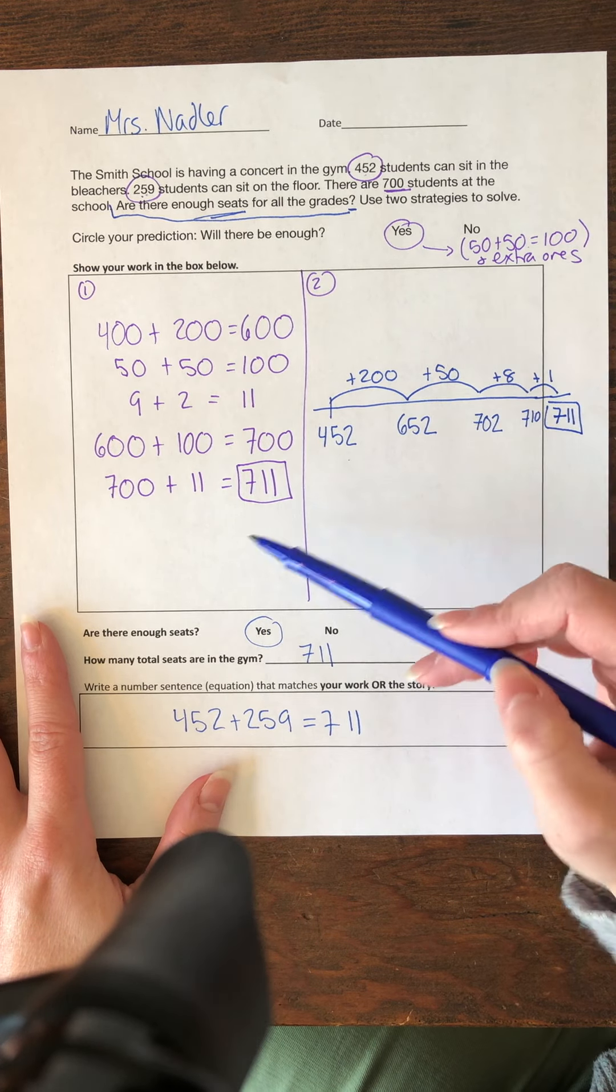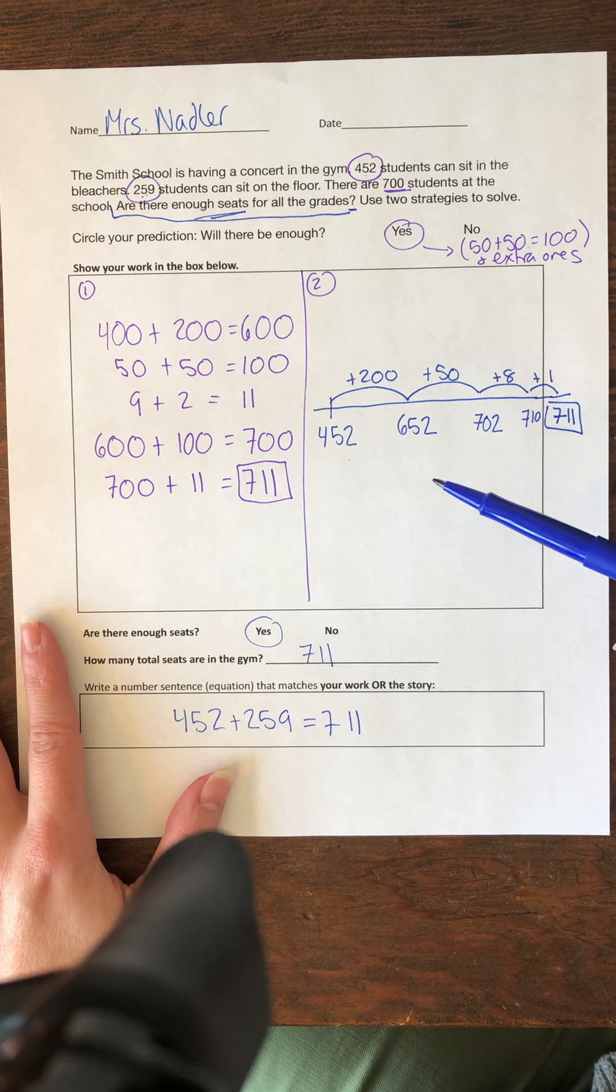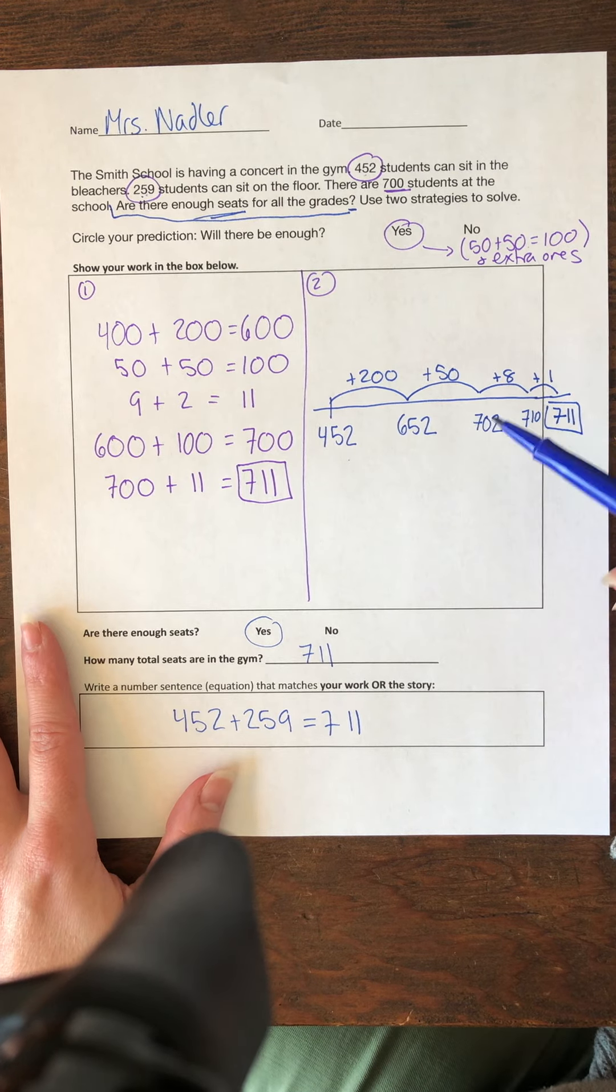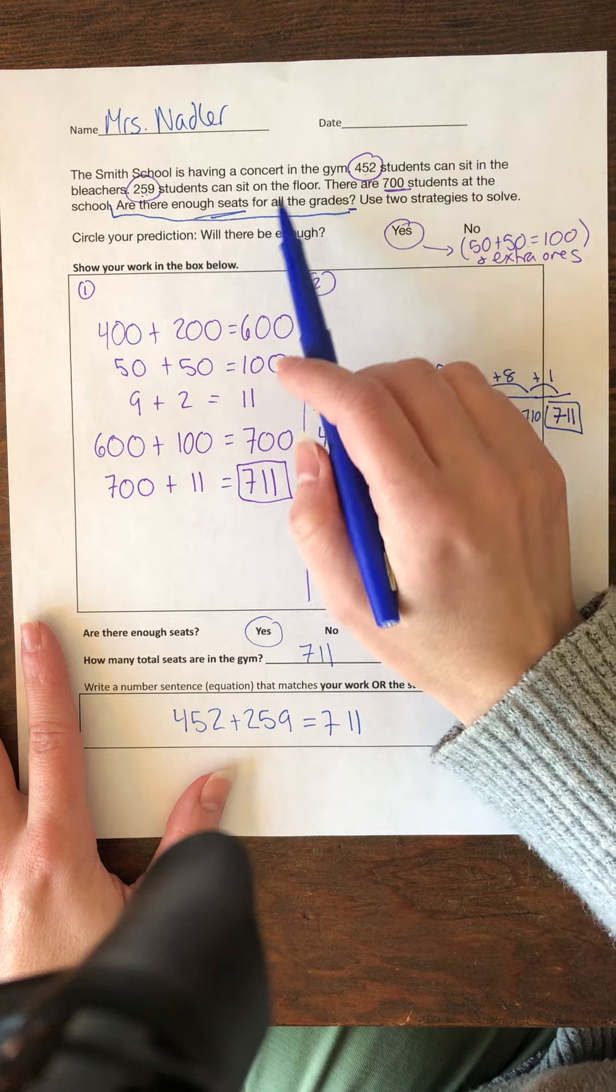Which means there are enough seats. There are 11 extra seats for the 700 students. So hopefully the teachers will get to sit, not sit on the floor. Well, I guess they're going to sit on the floor maybe.